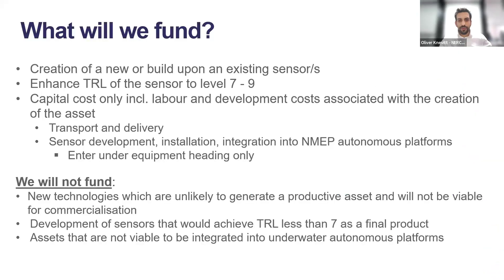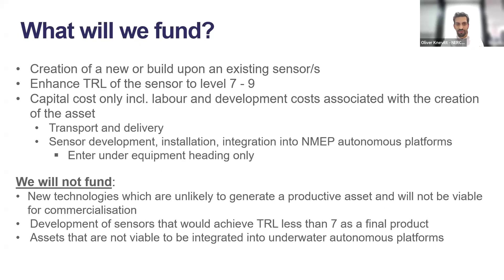This is a capital call to create an asset — not a return to capitalizable costs. We're looking to fund the creation of a new or upgraded sensor with the aim of enhancing the technology readiness level to a minimum of TRL 7. This call only covers capital, at 100%, including development and labor associated with creating the asset, as well as transportation and delivery costs. Please put all costs into the equipment heading only on the Funding Service system. We're not going to fund technologies that are not going to create a productive asset.